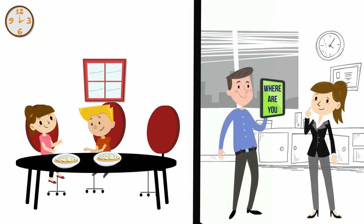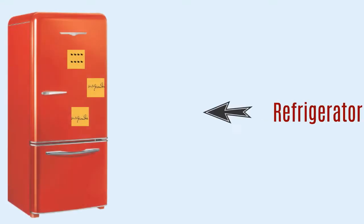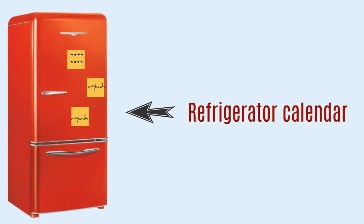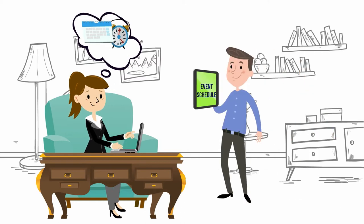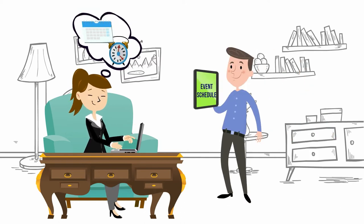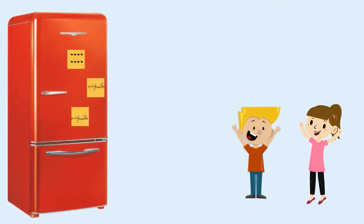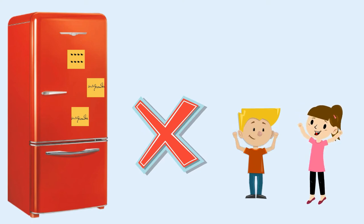And the where are you texts are blowing up your phone. They tried the refrigerator calendar, but Mom had to duplicate events into her day timer, and Dad had to put them into his phone, if he remembered. And the kids, well, they never looked at it anyway.